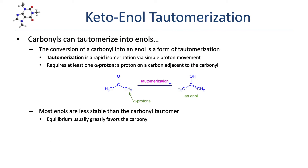Most carbonyls undergo tautomerization, a rapid isomerization via simple proton movement. While there are many types of tautomerization, the conversion of a carbonyl into an enol is by far the most common and is often referred to, somewhat inaccurately, as keto-enol tautomerization. Looking at the example, we see the tautomerization of acetone into its enol tautomer.